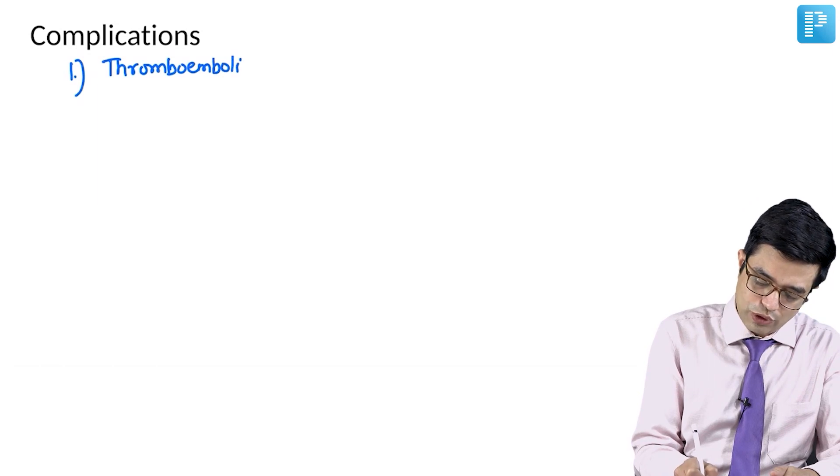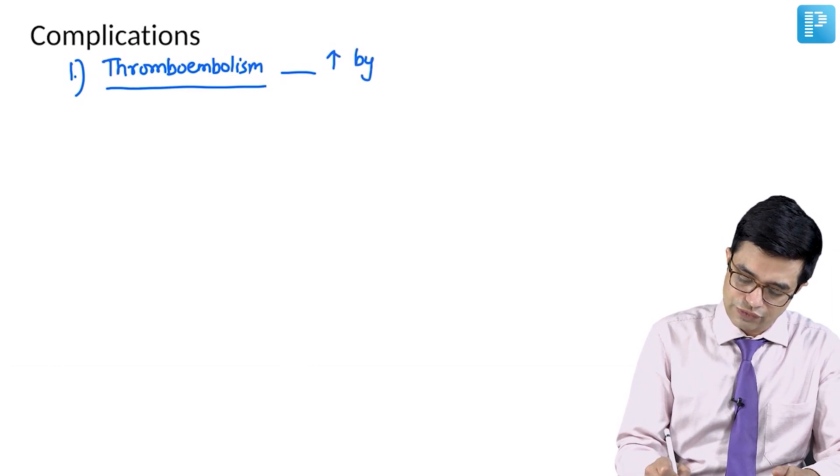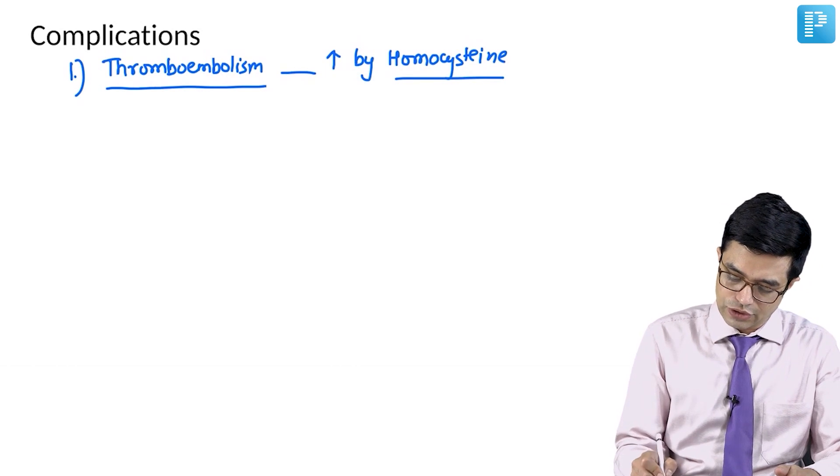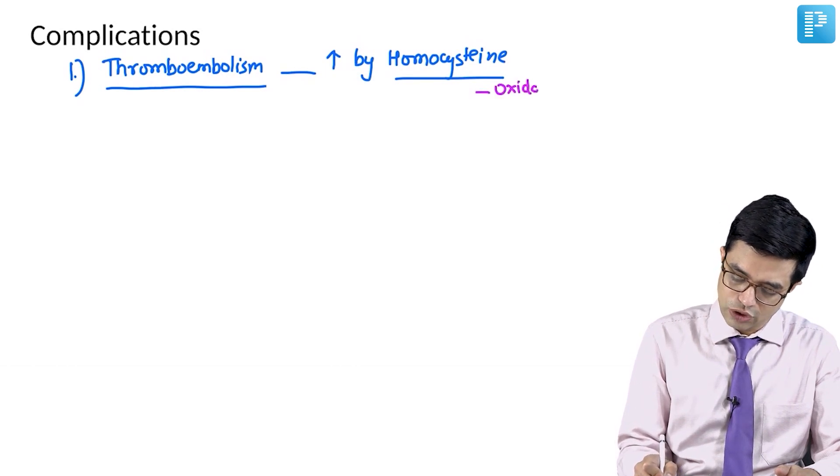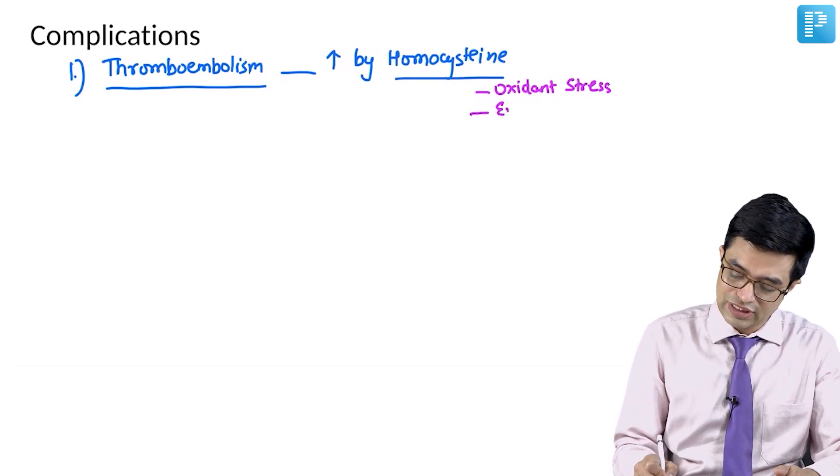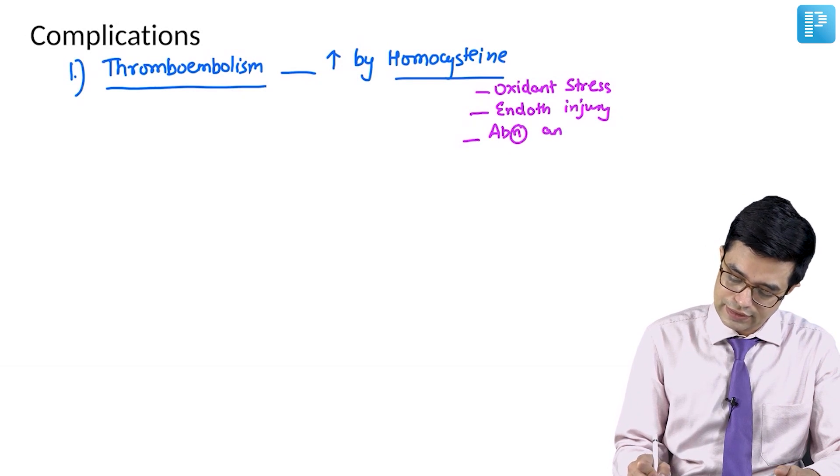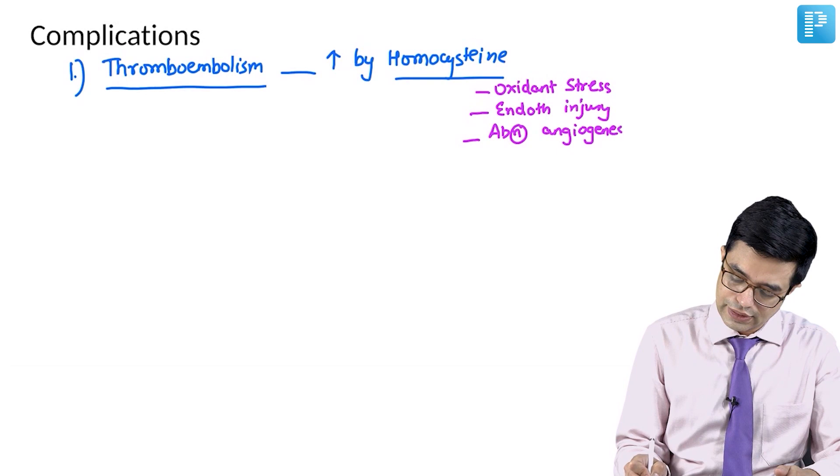Why does thromboembolism happen? Thromboembolism risk is increased because of homocysteine. What homocysteine does is it causes multiple problems. It causes oxidant stress, free radical formation is increased. It causes endothelial cell injury. It has a tendency to promote abnormal angiogenesis and it decreases fibrinolytic activity which is normally happening.